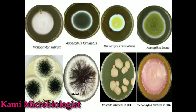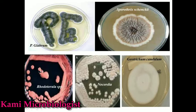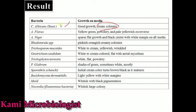Penicillium shows shades of green, sometimes whitish colonies. As you can see on screen, these are the Penicillium colonies. Sporothrix schenckii mostly produces initially creamy-colored colonies that turn brown to black when mature — as shown, these are the Sporothrix schenckii colonies.